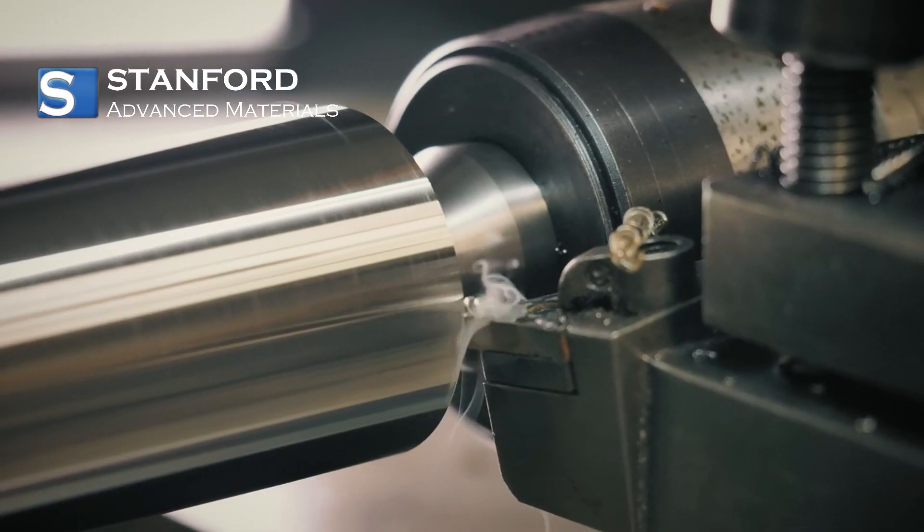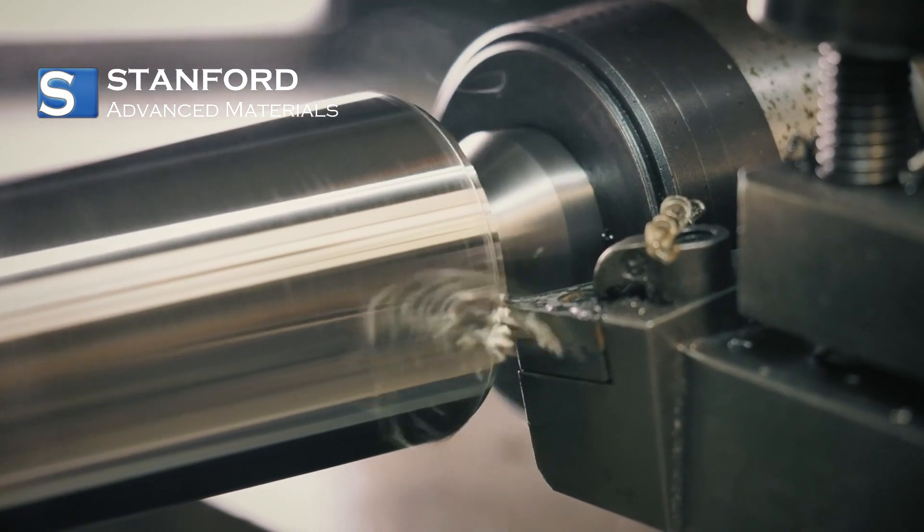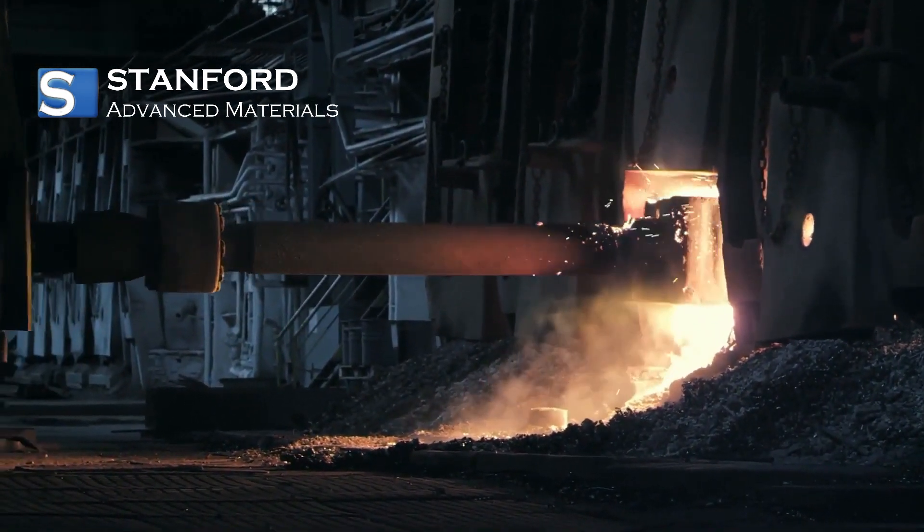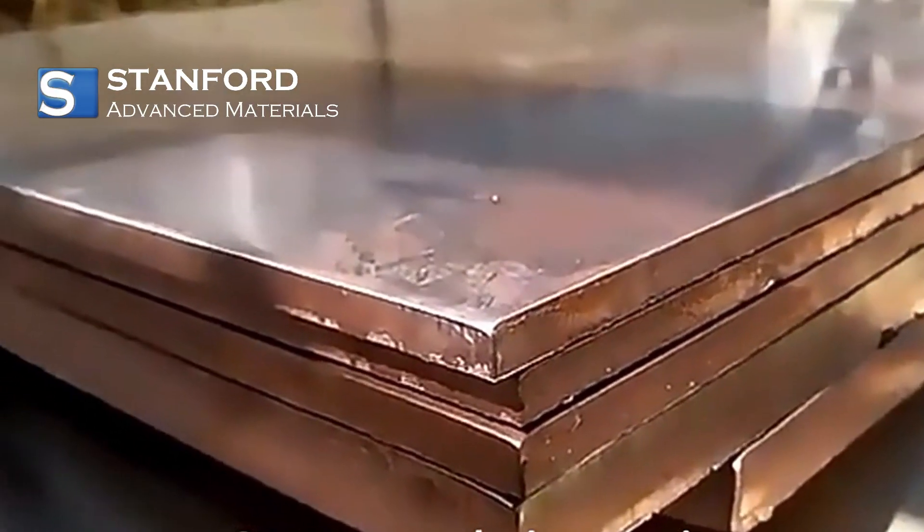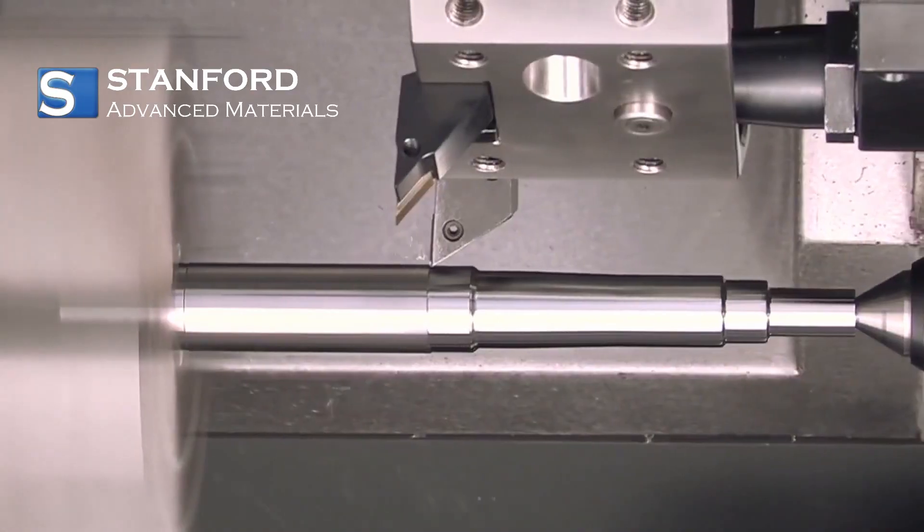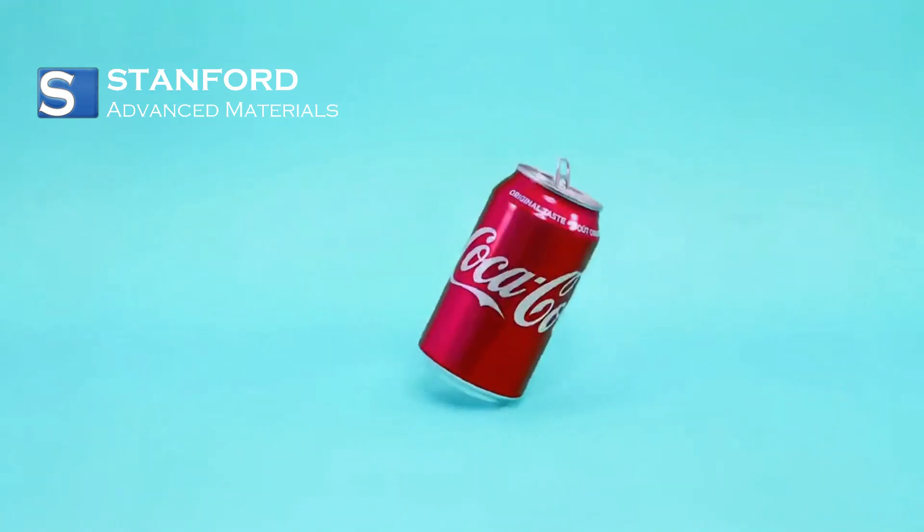Each metal brings its own set of advantages and applications to various industries. These metals are integral to modern life. Copper's conductivity makes it vital for electrical wiring and electronics. Aluminum's lightweight yet strong properties contribute to everything from airplanes to beverage cans.